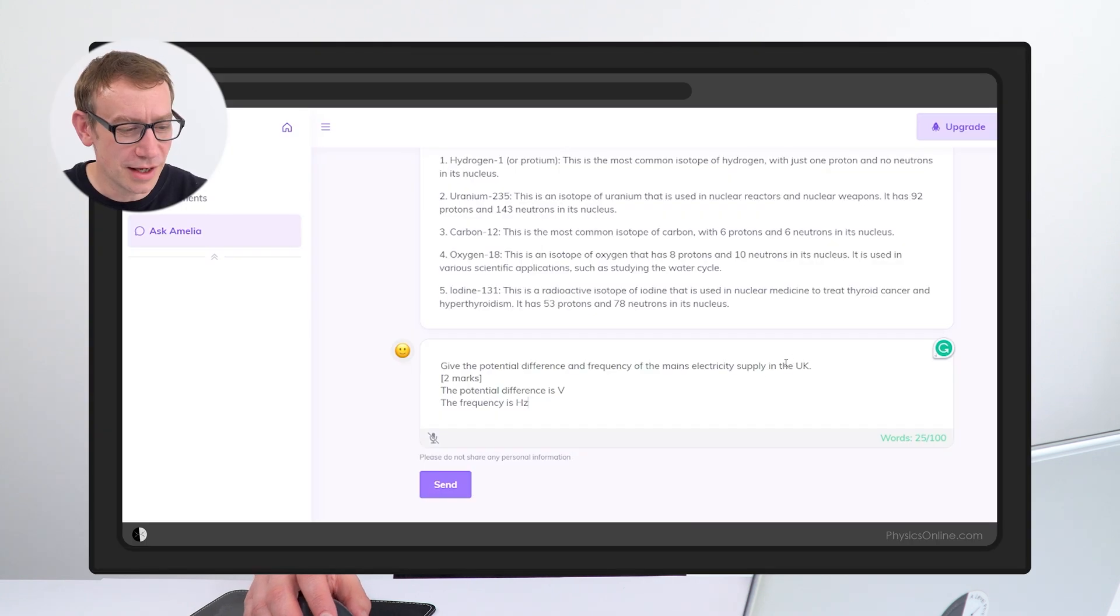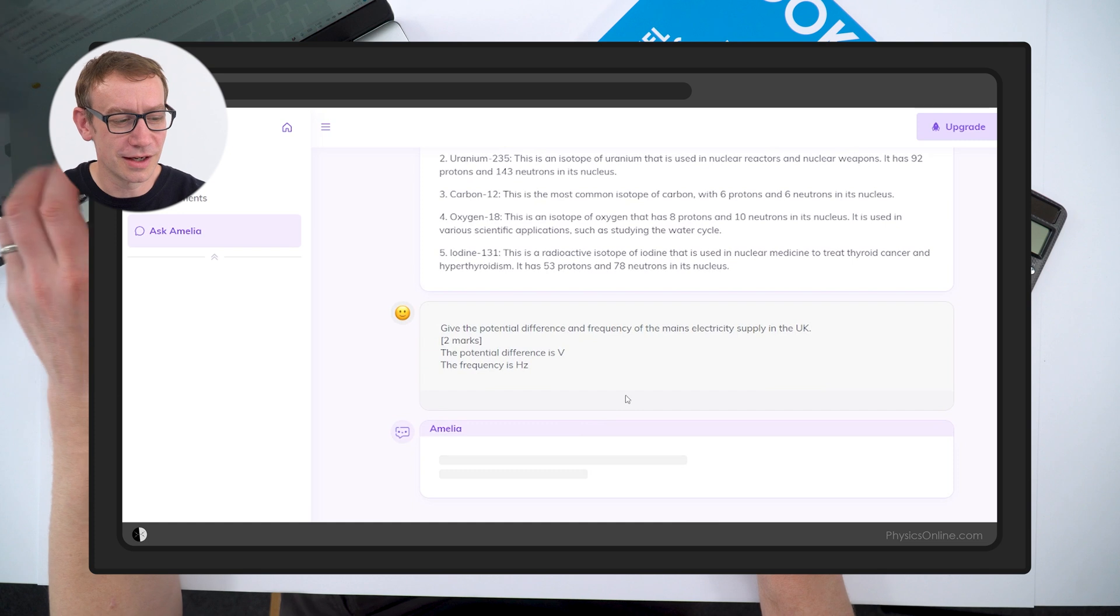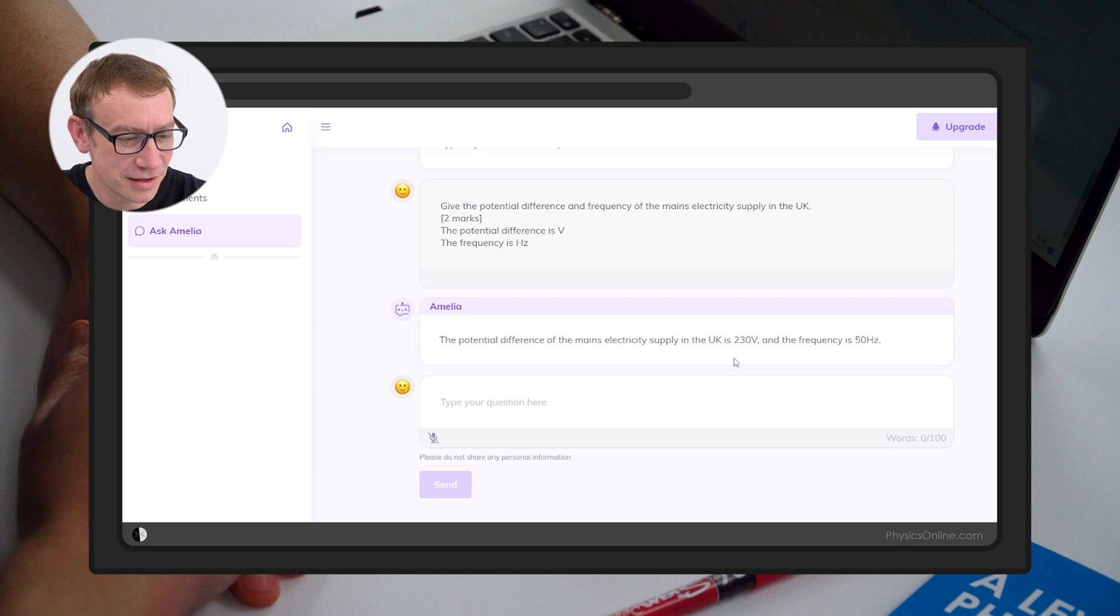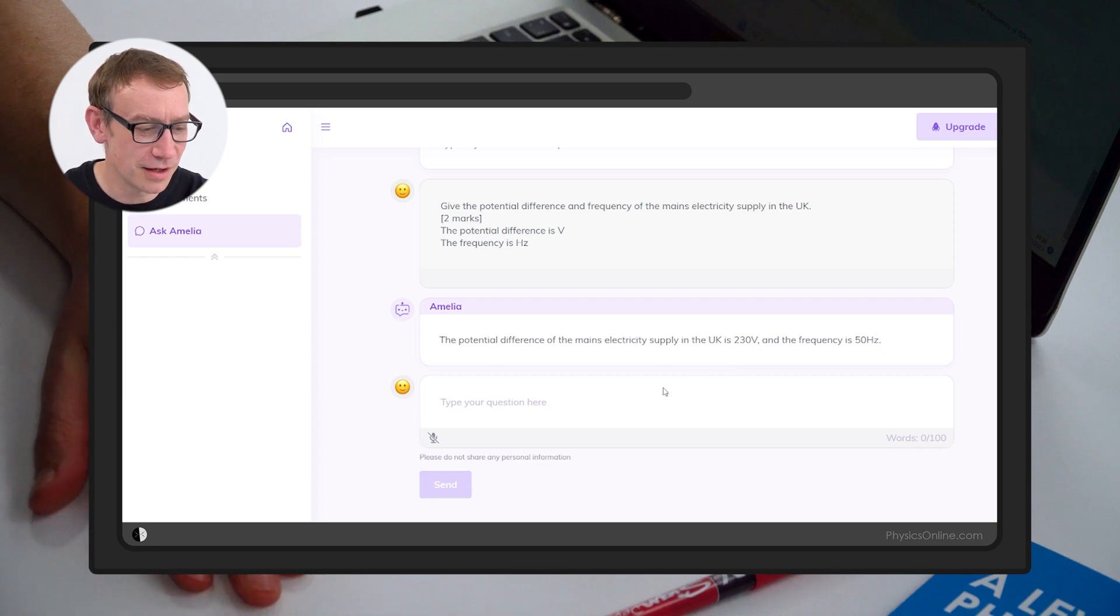Something else I found that is actually quite useful when you use AI is maybe you have an exam question. All I've done with this one is copy and pasted it from an exam paper. Give the PD and frequency of the mains electricity supply in the UK. Now I've just left it like it is and all I want to see is what the answer is. Yeah, 230 volts and the frequency is 50 hertz.